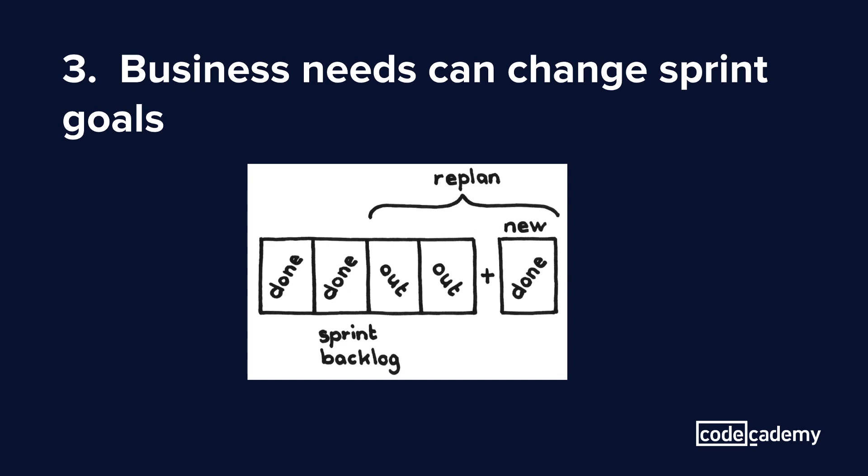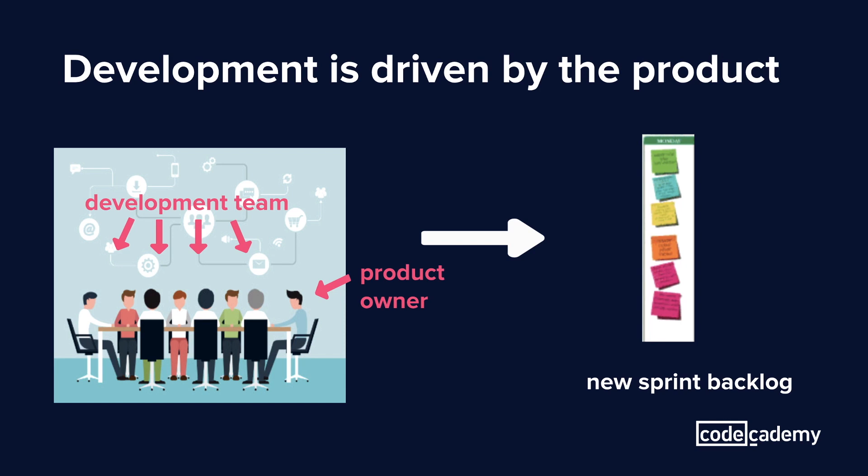There may also be times when your business needs change in the middle of your sprint and make your sprint goals obsolete. It might throw off the time estimates for the rest of the sprint, but that's okay. Sprints are just a way to shape and organize development work. Depending on how the new business needs change the goals of the sprint, the product owner can meet with the developers to create new tasks to complete, or developers can pull tasks from their own backlog and work on reducing technical debt. But at the end of the day, your product's needs should drive development.